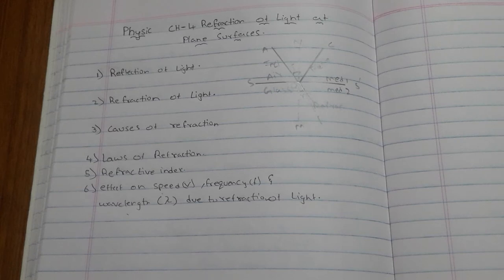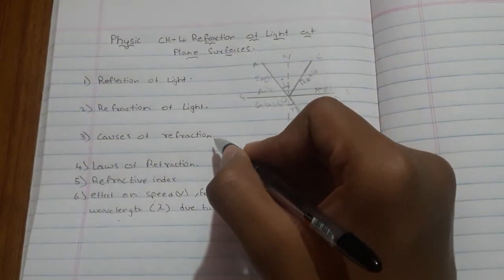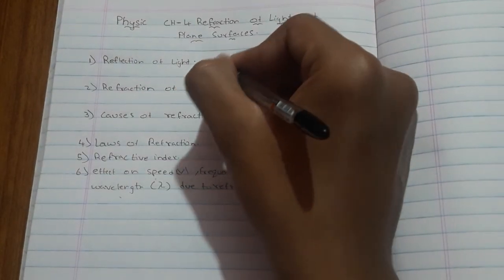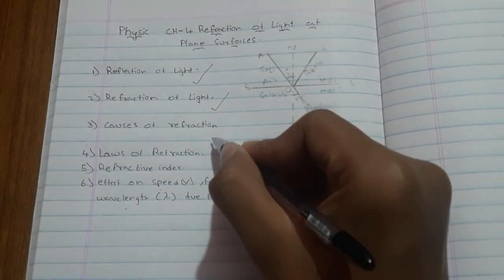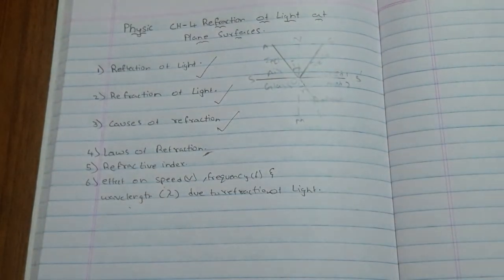Make note: for normal incidence — if the incident ray is at zero degrees from one medium to another — there may be a change in speed, but the direction of refraction does not change. Those are the causes of refraction. We have now completed reflection of light, refraction of light, and causes of refraction. Now moving to laws of refraction.